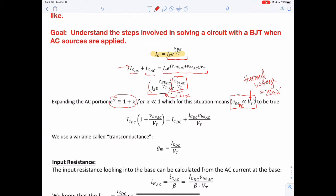So if we expand that, this then becomes 1 plus VBE AC over VT. We see we have a DC value here plus an AC value. And looking at this, if we put this into a variable called transconductance.